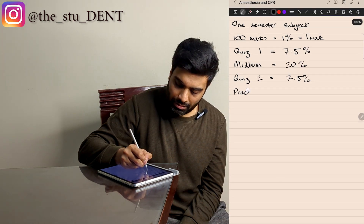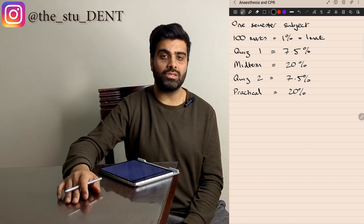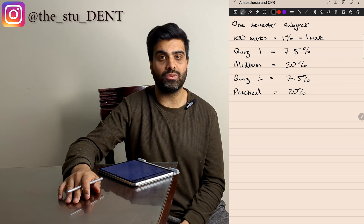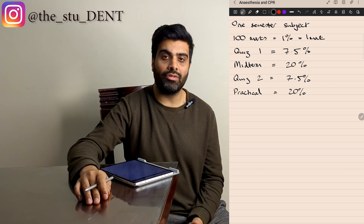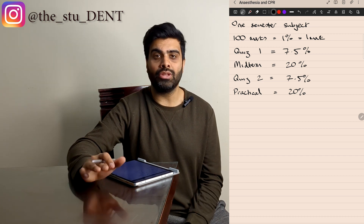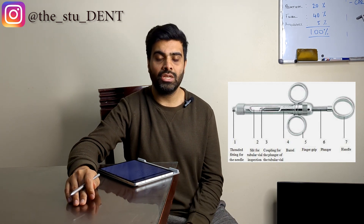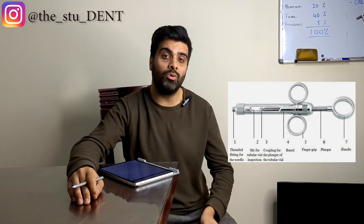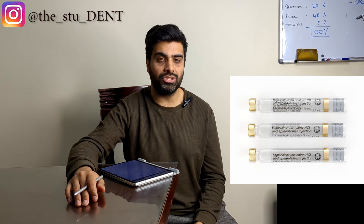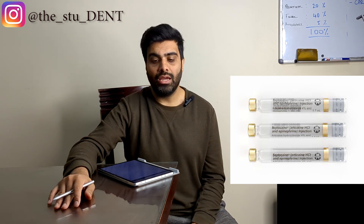We then have the practical exam, worth 20%. You'll be paired up with somebody at the beginning of the semester — you get to choose, which is quite nice. You'll meet with the doctor along with all the other students on the day, and one by one they will ask you things about local anesthesia. Personally I was asked to differentiate between two types of syringes — the side-loading syringe and the front-loading syringe. Then there was a question around what was inside a cartridge: the anesthetic solution, which was articaine in my case, the vasoconstrictor, which was epinephrine, the size of the cartridge — 1.8 — and then a few other questions. I was also asked to wrap our units.